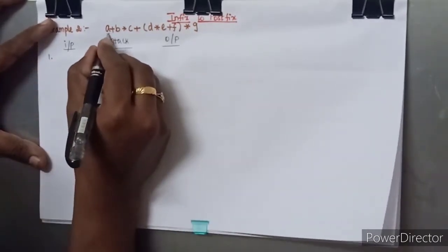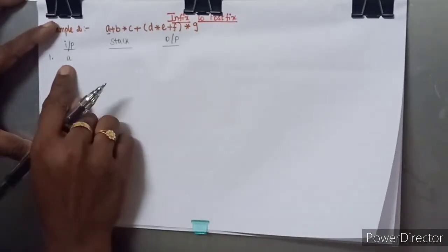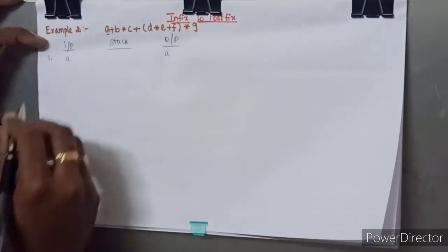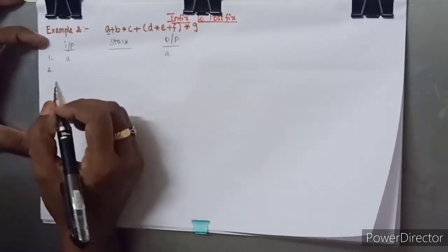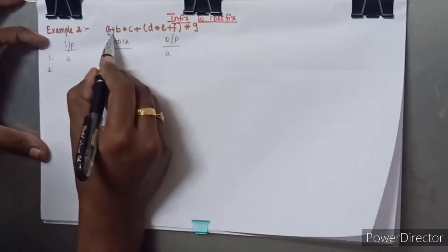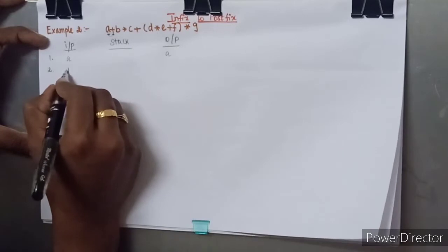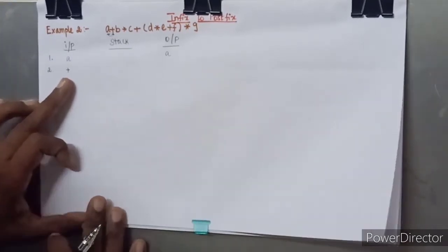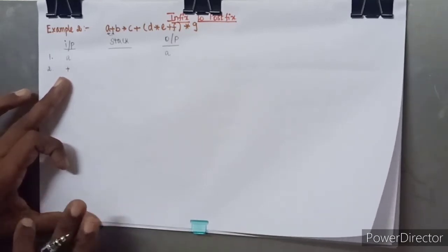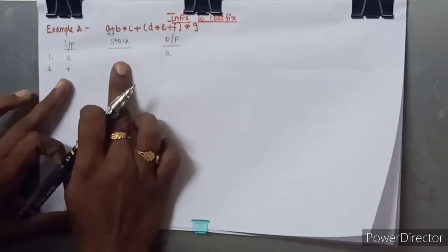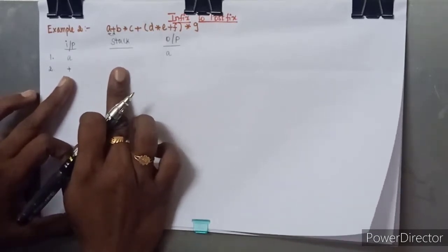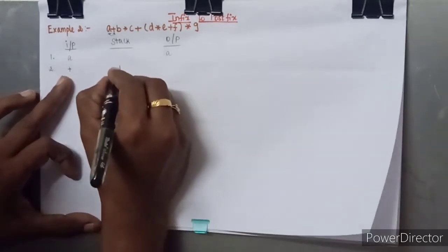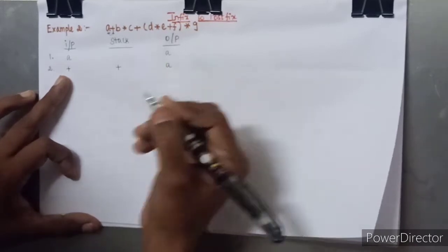The first character encountered is A. As it is an operand, it should be placed onto the output. The stack is empty. Moving to the next character, which is plus — this is an operator. Since the stack is empty, there is no need for a precedence or associativity check, so we push this plus directly onto the stack. The output remains A.